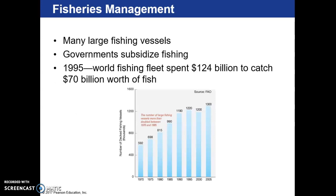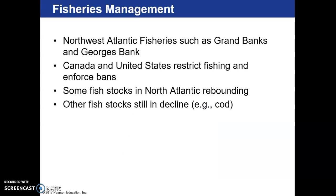There are many large fishing vessels, and earlier there was significant government subsidizing. In 1995, the world fishing fleet spent 124 billion dollars but there was only 70 billion dollars' worth of fish to catch — a lot of money being spent on decreasing stock. At some point that becomes unsustainable, so our fishing fleet has drastically decreased since then.